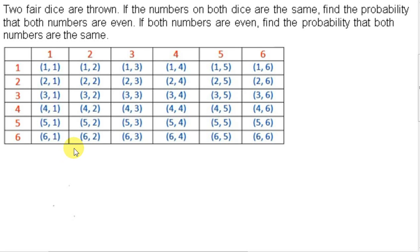We will illustrate the concept of conditional probability by considering this example. Two fair dice are thrown. If the numbers on both dice are the same, find the probability that both numbers are even.